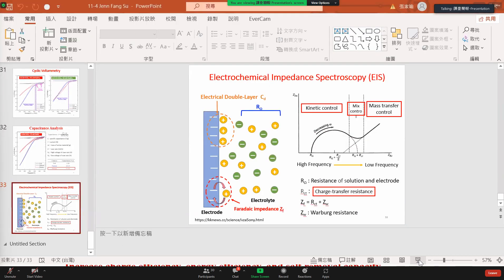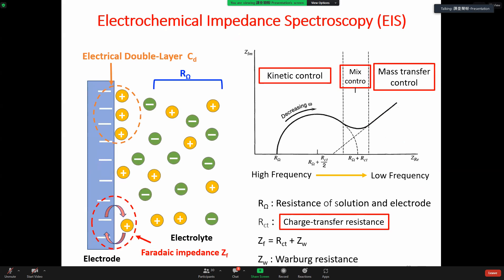Yeah, this is the EIS figure. For mass transfer control, you will have a straight line. For the circle, that means kinetic control. Because we almost use the same conditions, this one is the resistance of solution and electrodes. Basically, we use the same nitrate concentration and electrolyte.